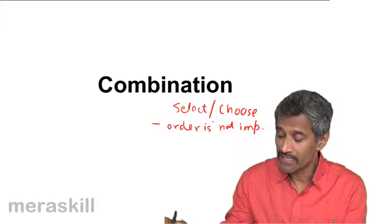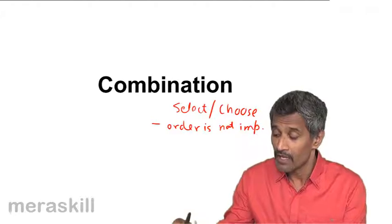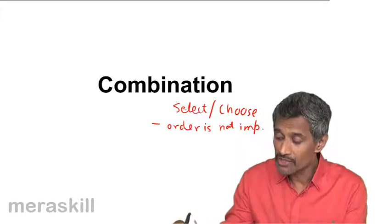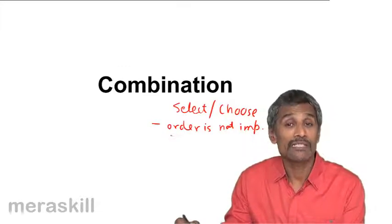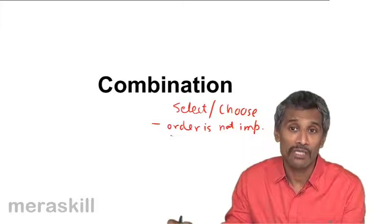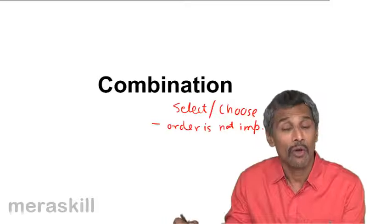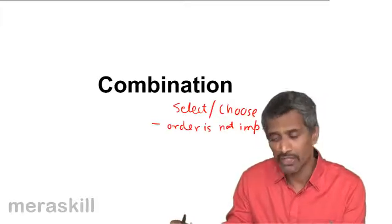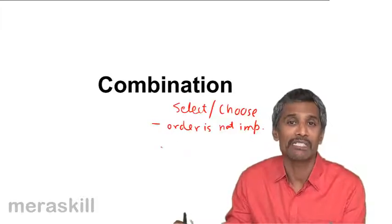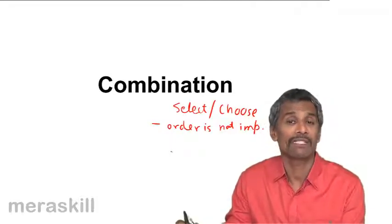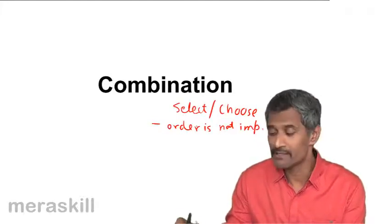When we select or choose with order not mattering, we use the concept of combination. We are going to take up specific cases of combination, including special cases where there could be repetition, just as we had cases where specific terms are included or excluded in a selection or arrangement in permutation. On the same lines, we also have the concept of excluding or including specific items in combination.